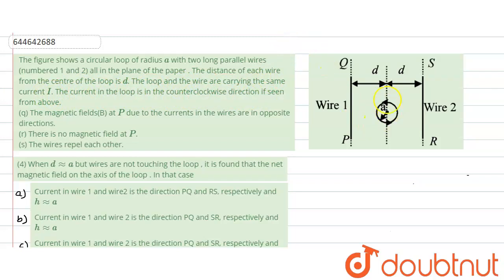So what is the situation? The situation is like this: here there is a loop carrying current in the counterclockwise direction as seen from the top, and this is one infinite wire and this is another infinite wire. It is given that d is close to a, but the wires are not touching the loop. This d distance is close to the radius of the loop but the wires are not touching.